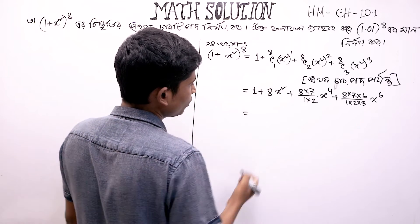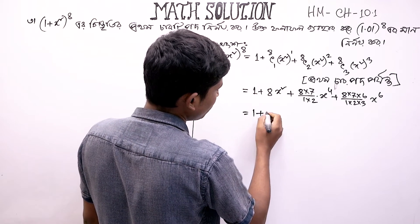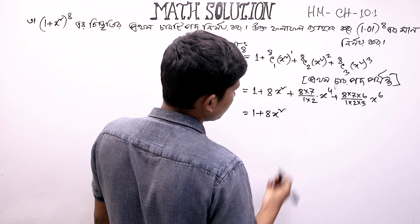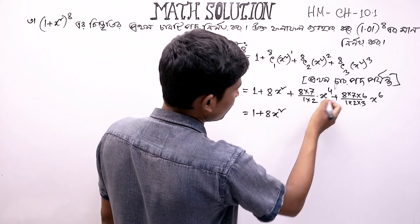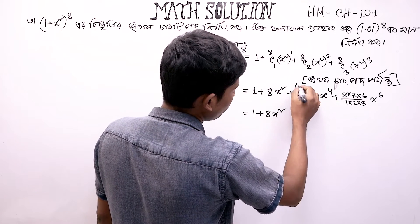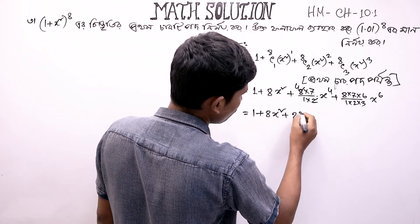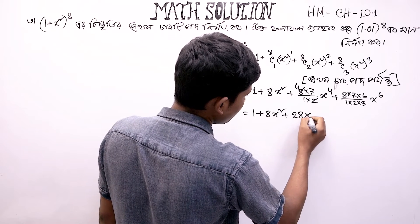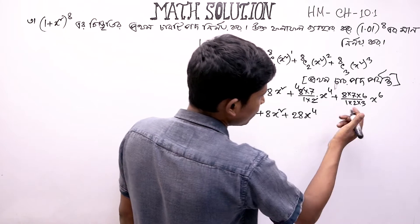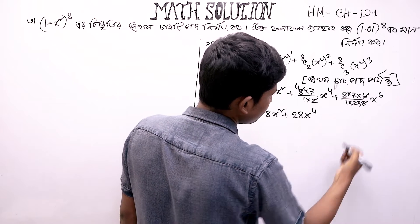સો, આમ દীભો: 1 + 8x² – એখা નমাંদের কথাবা আশে. 28x⁴ – এখানে দেখো, এটা আমাদের কথা থেকে আসে.